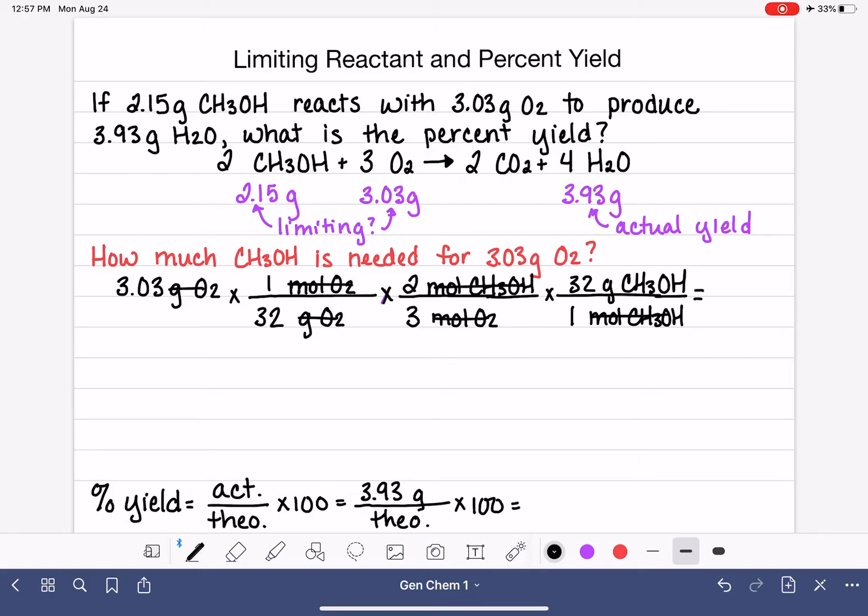32 grams. And make sure that we have our problem set up correctly and that all of our units cancel. And so once again, what we're calculating here is how much CH3OH do we need to react with this quantity of O2. We're going to figure out if we actually have enough.